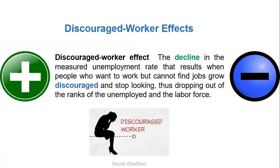There is a phenomenon called the discouraged worker effect. It is the decline in the measured unemployment rate that results when people who want to work but cannot find jobs grow discouraged and stop looking, thus dropping out of the ranks of the unemployed and the labor force. As you can see, this appears like something positive — a drop in the unemployment rate — however, this drop is caused by people who are discouraged and stop looking for a job, which is not good at all. So not every decrease in the unemployment rate is good for the economy, because we might have the discouraged worker effect.